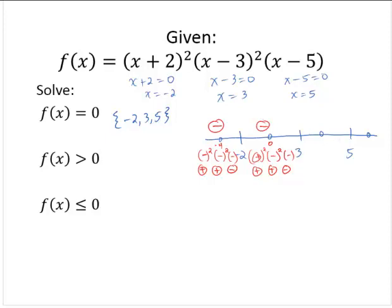Choosing a value between 3 and 5, let's say 4. 4 plus 2 is positive, and that's being squared. 4 minus 3 is positive, and that's being squared. And 4 minus 5 is negative. So that gives me a positive times a positive times a negative, which is again negative.